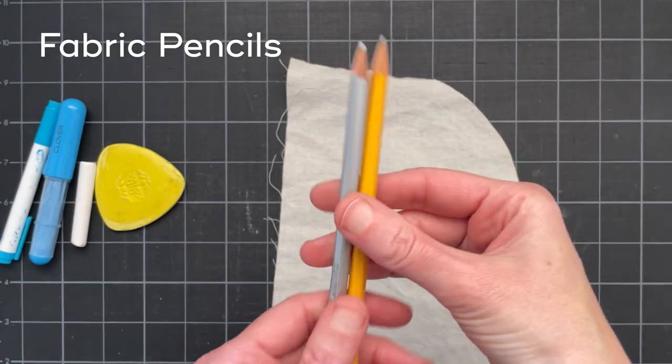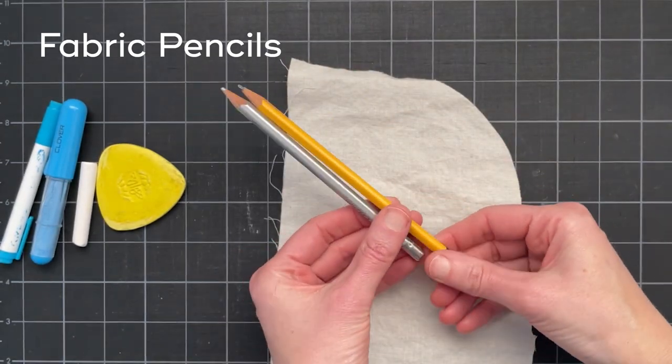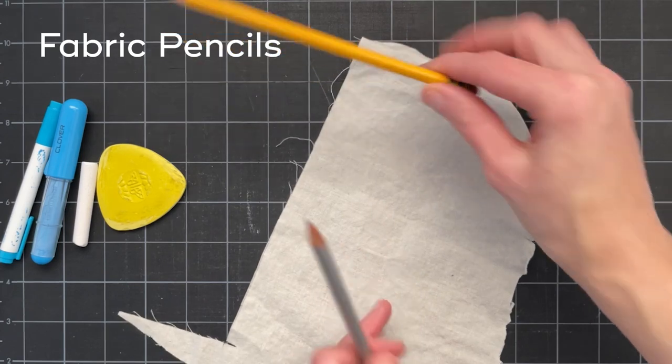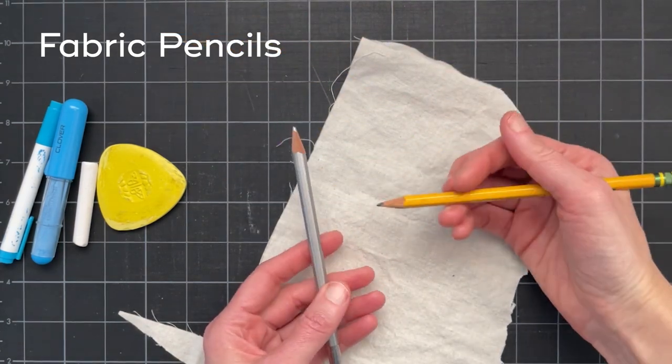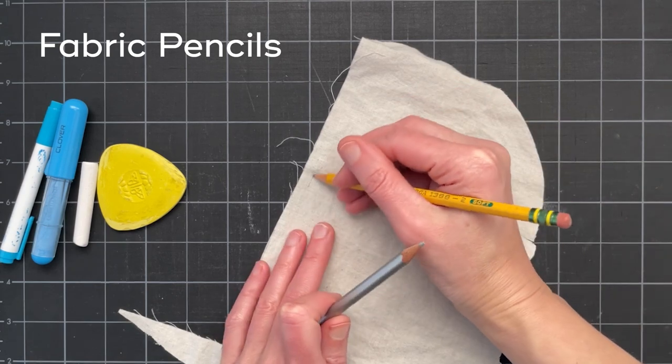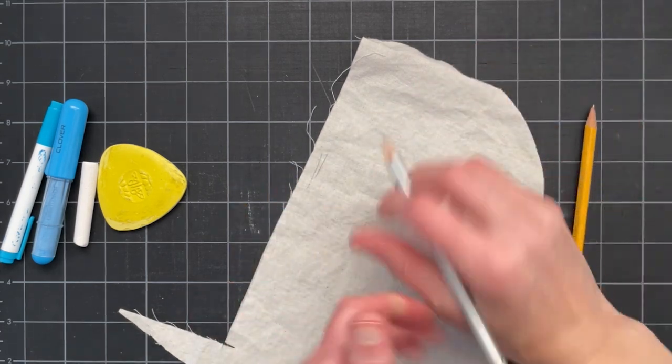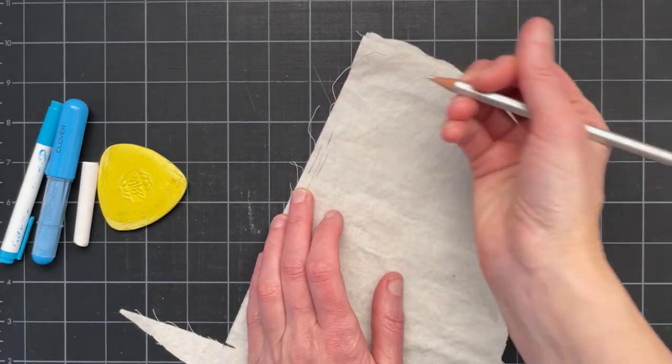First we have some pencils. I honestly don't use the pencils very often. These are something that I would really only use on a section of fabric that won't be visible later, and just like with paper you can easily mark on fabric.